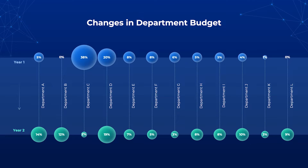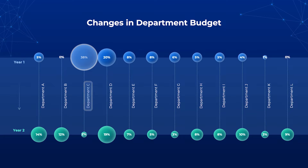The chart also communicates changes in budget allocation from year to year. In this case, even though department C was previously given lots of attention, it's since been demoted into a much less important role. Often this means a pivot in a company's strategic priorities, or just a general cut in budget across the board.